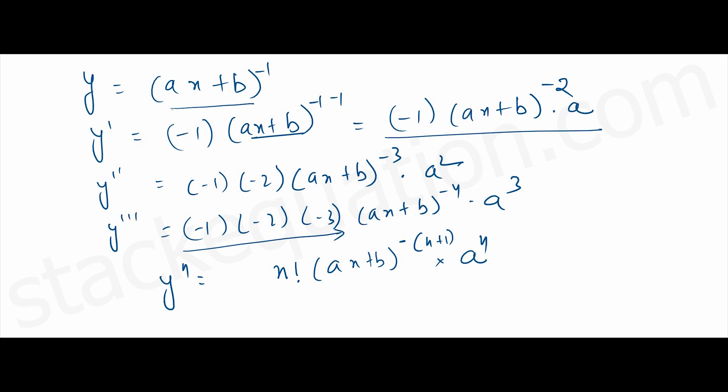And if you observe the sign, when n is even, there is no negative sign. And when n is odd, that is 3, the sign is negative. Because minus 1 times minus 2 times minus 3 will give a negative sign on the left hand of the expression.